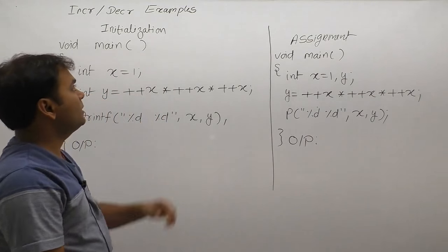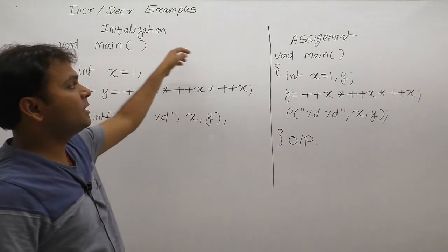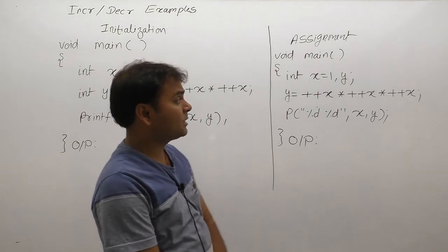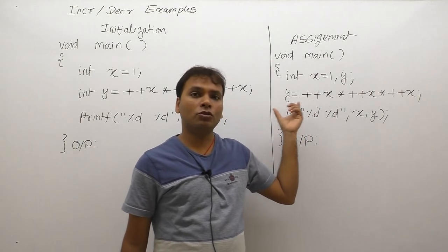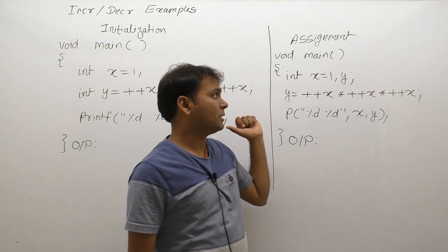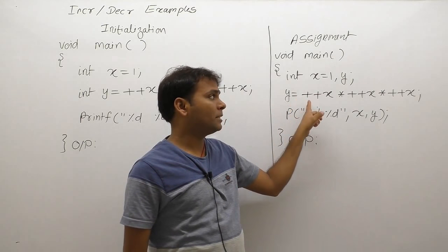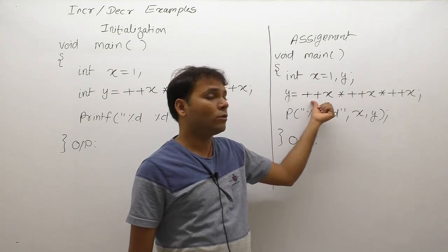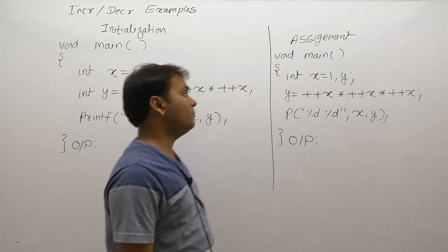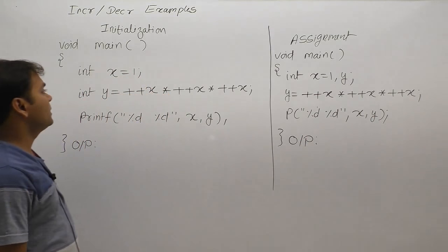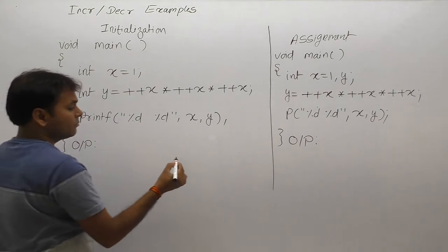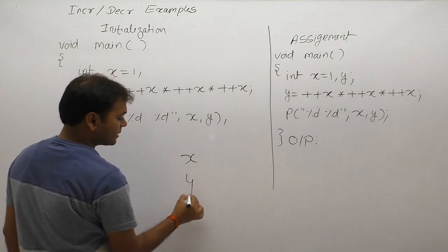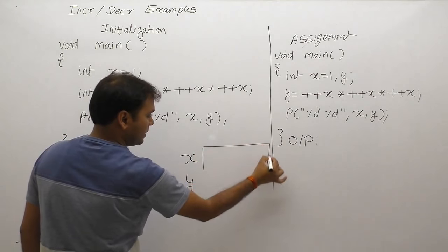Next example regarding initialization and assignment rules. In the previous example, all operations were post operations. But in this case, all operations are pre. Now testing again the same example regarding initialization rule — memory allocation for x and y.